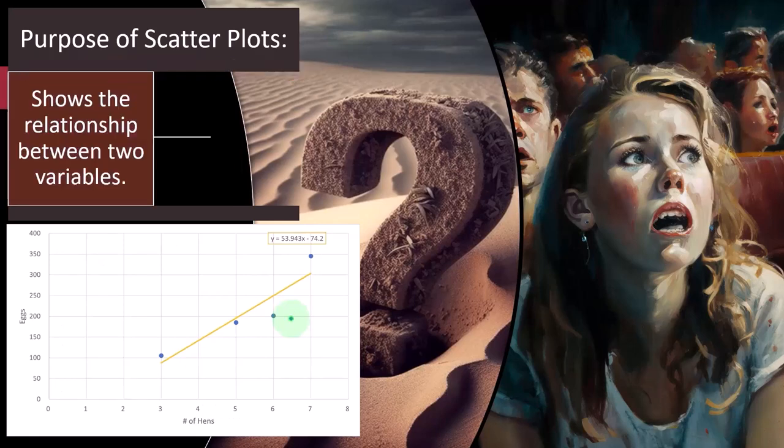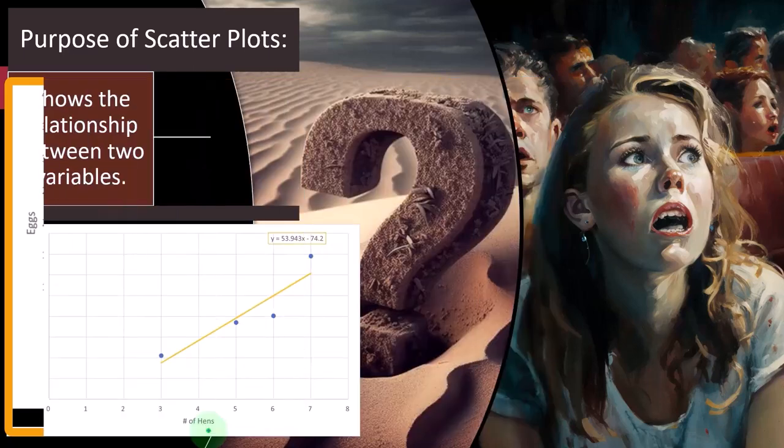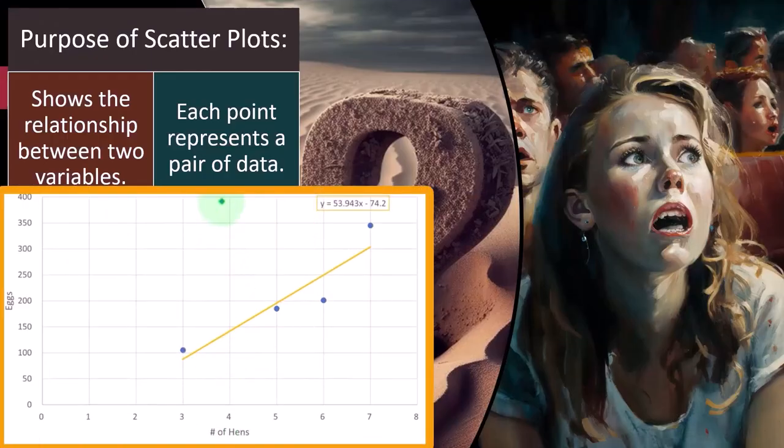Purpose of scatter plots: show the relationship between two variables. So we're back to our hens and our eggs. If we plot these two things together, we can show the relationship. Now, obviously, intuitively, if I was a farmer, I would have a pretty decent sense that hens are causing the eggs, right? That more hens means there's a relationship between the two, but each point represents a pair of data.